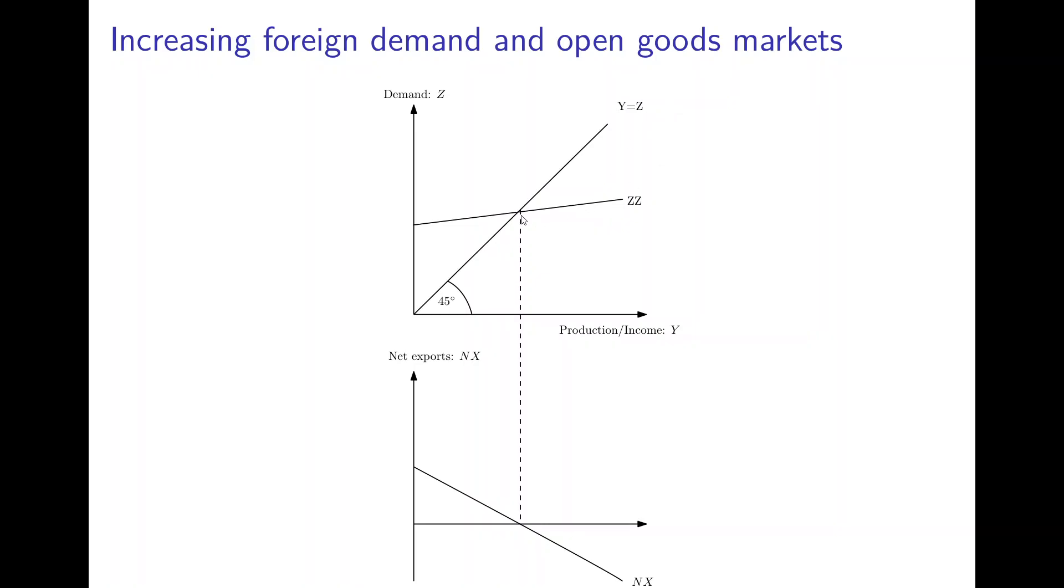We have that demand is equal to income demand for domestically produced goods, and we assume as I said before that there is no trade surplus nor a trade deficit, so trade is balanced in this equilibrium so that net exports are zero.